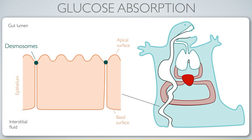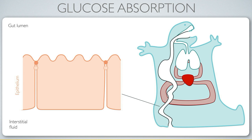There are also tight junctions, which provide a chemical barrier prohibiting the movement of at least large molecules around the cells. The challenge is to move glucose — the nutrient the cell needs to identify and transport.